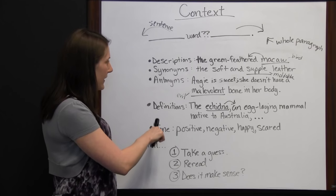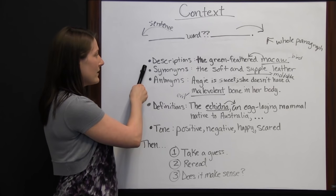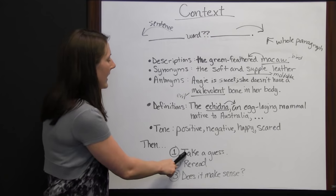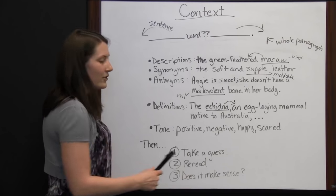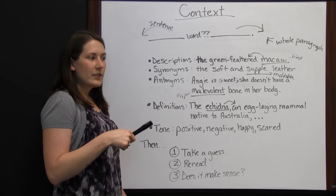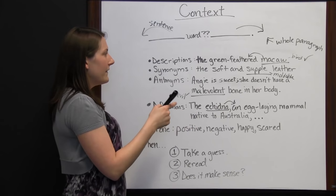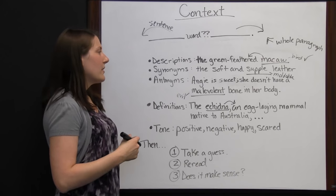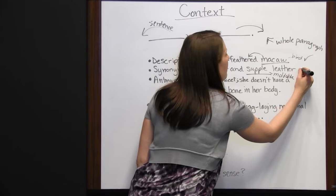Once you've looked at clues — looking before and after the sentence, looking at the whole paragraph, seeing if you can find a description, synonym, antonym, definition, or figure out the tone — take a guess at what the word means. Then reread the sentence to see if it makes sense. For 'the green feathered macaw,' if we insert 'bird' — 'the green feathered bird' — that makes sense. For 'soft and supple leather,' inserting 'moldable' or 'flexible' would also work.